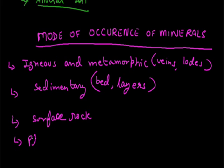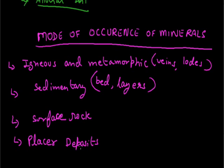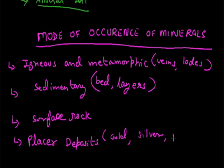The next type is placer deposits. Placer deposits occur in alluvial soils, in the sands of valley floors and the base of hills. The minerals found through placer deposits are gold, silver, tin, and platinum.